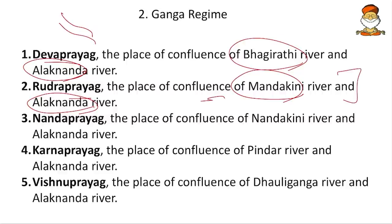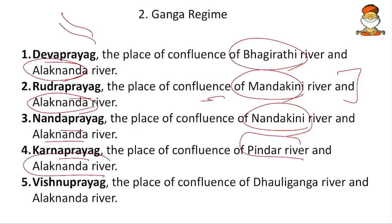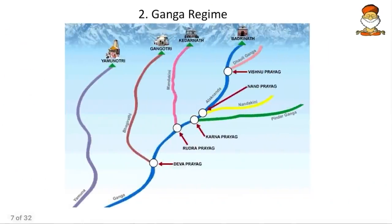Corbett National Park also lies in this region. Nanda Prayag is the confluence of Nandakini and Alaknanda. Karna Prayag is Pindar and Alaknanda. Vishnu Prayag is Dholi Ganga (or Vishnu Ganga) and Alaknanda. Locating all these on a map makes it easier. Alaknanda flows from Badrinath; Dholi Ganga and Alaknanda confluence at Vishnu Prayag; then Nanda Prayag, then Karna Prayag with Pindar river, then Rudra Prayag and Dev Prayag.